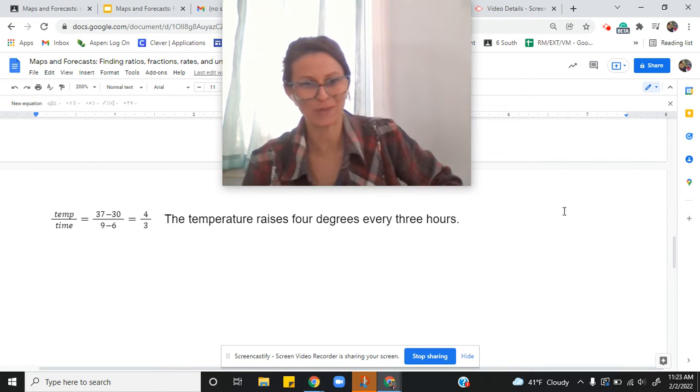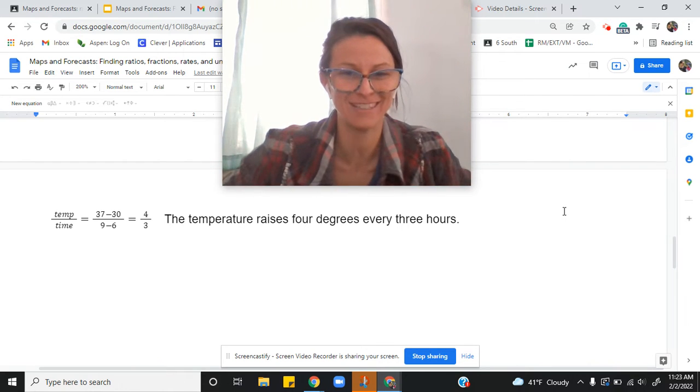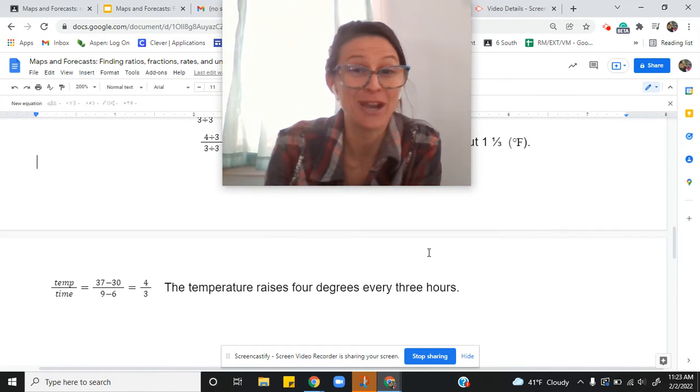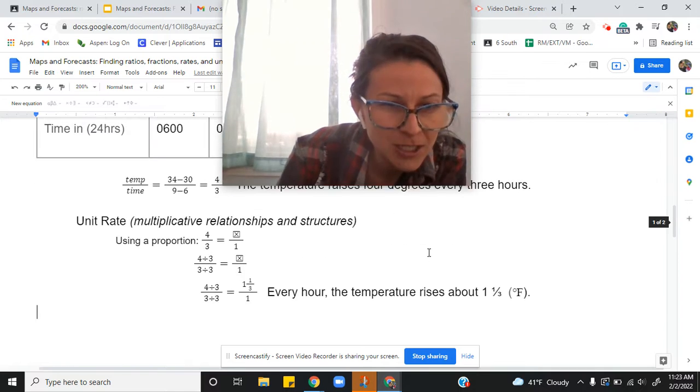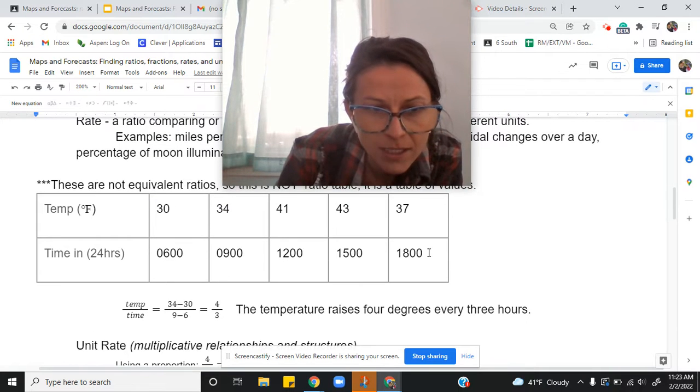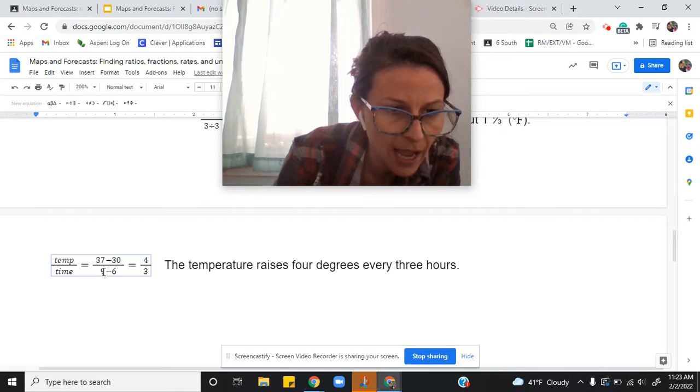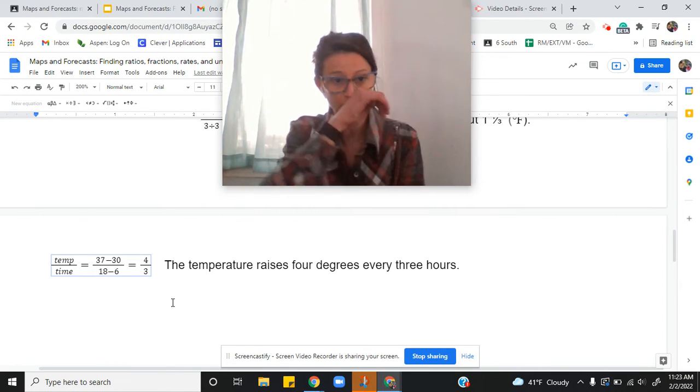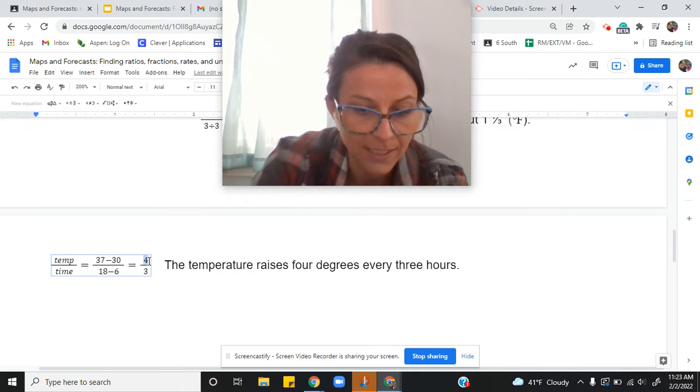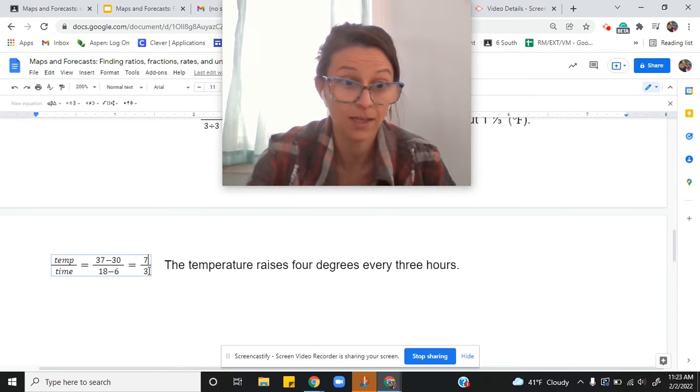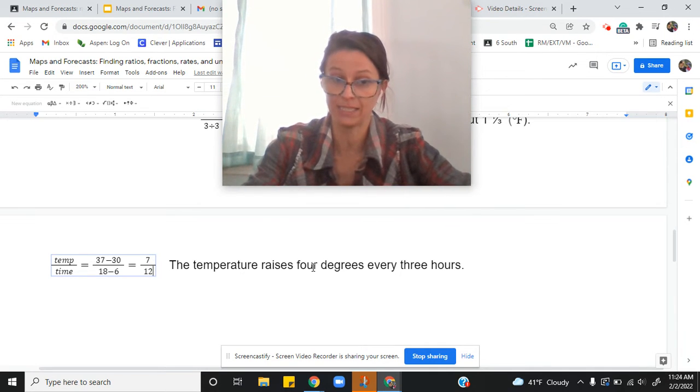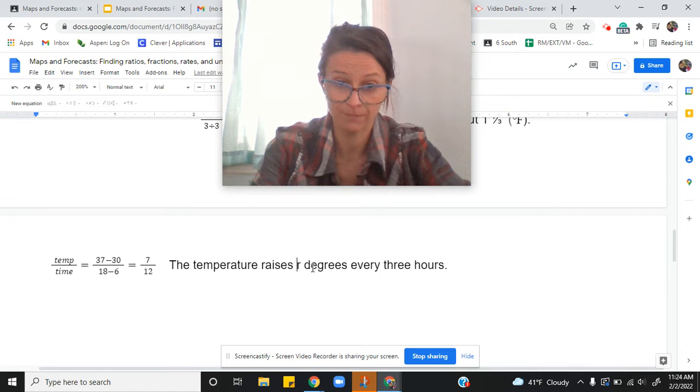My internet cut out, so this is an additional video to finish the last. I hope you tried it on your own. Let me make sure - I think my internet cut before I could type in the time, so 37 to 1800 hours instead of 34 to 9. Beautiful. 37 minus 30 is 7, and 18 minus 6 is 12, so the temperature raises 7 degrees every 12 hours.